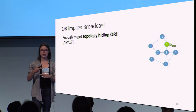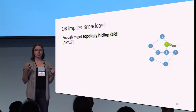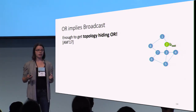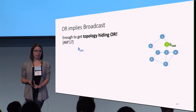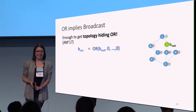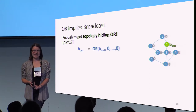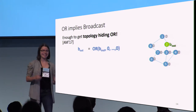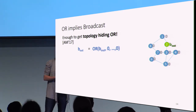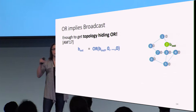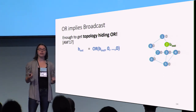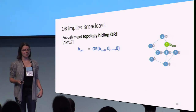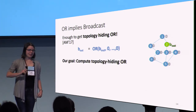So OR-homomorphic encryption implies broadcast. Instead of just going straight for broadcast, we're going to show how to compute the OR of a bunch of bits on a graph. This works because the output bit is actually equal to the OR of the output bit with a bunch of zeros. The source node is going to have his output bit; all other nodes are going to have zeros. And if at the end of the computation everyone gets the OR of the output bit, you will have broadcasted that bit.